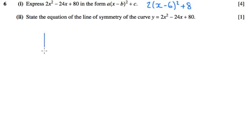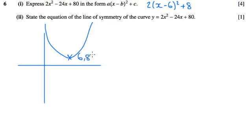So I know that this curve is going to have a minimum point of positive 6. We always take the opposite sign of this number, positive 6, positive 8. So the curve is going to look—I know that this point here is 6, 8.